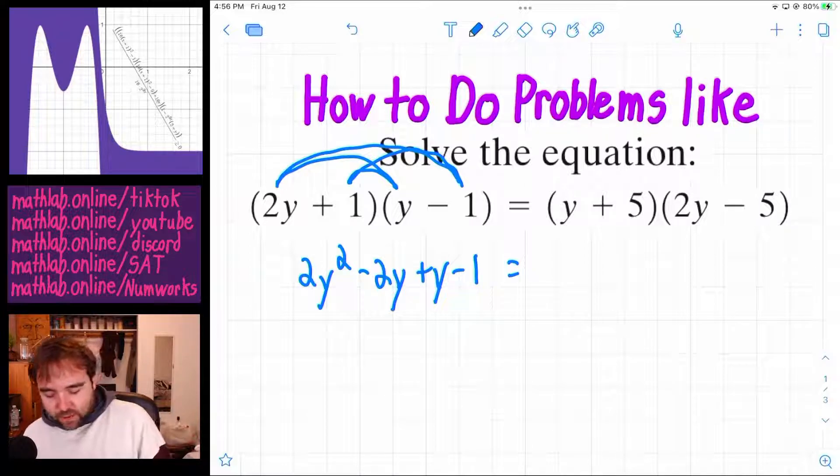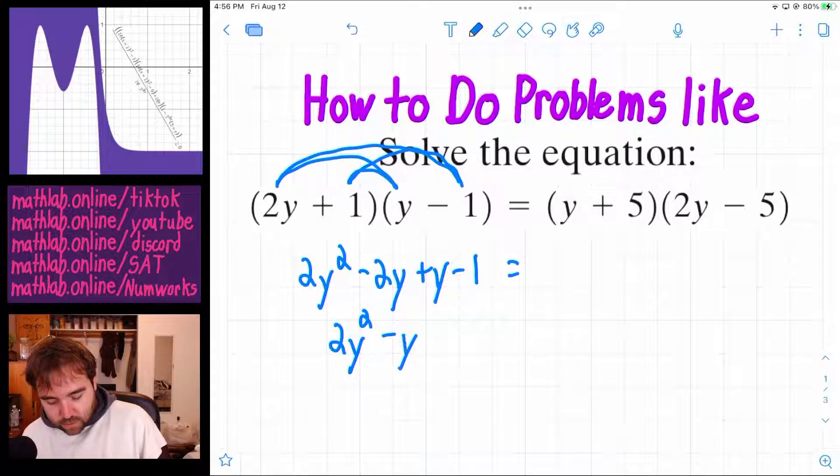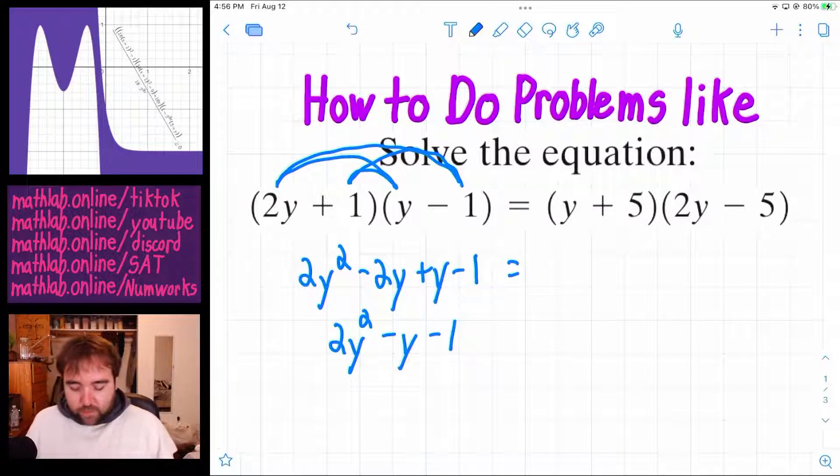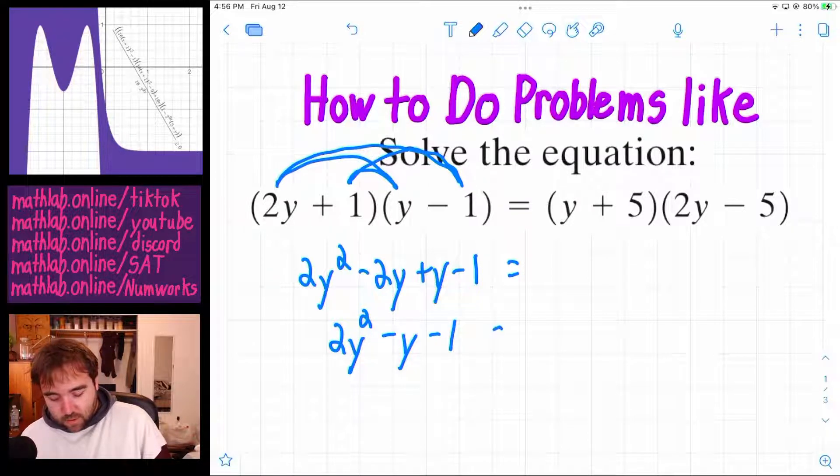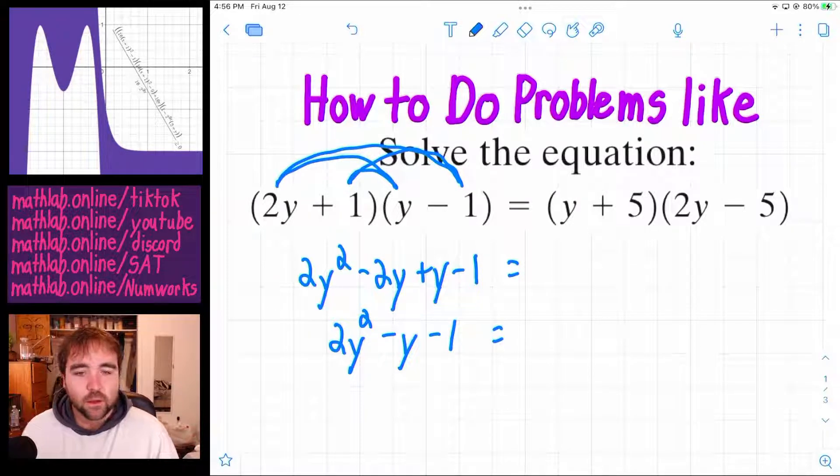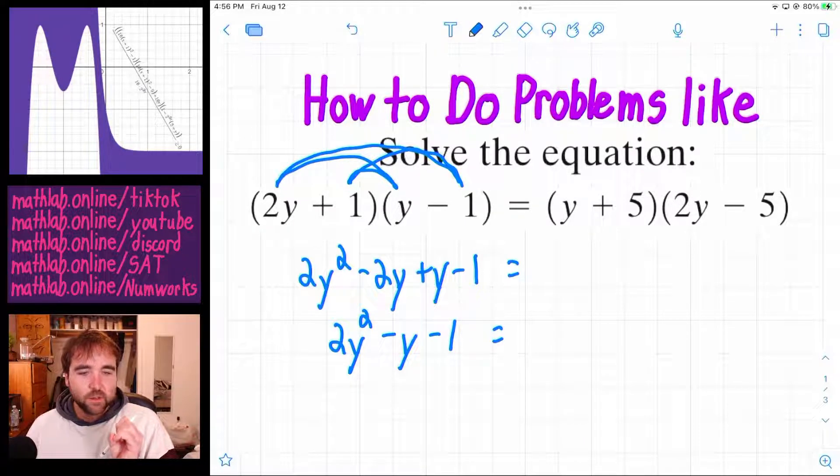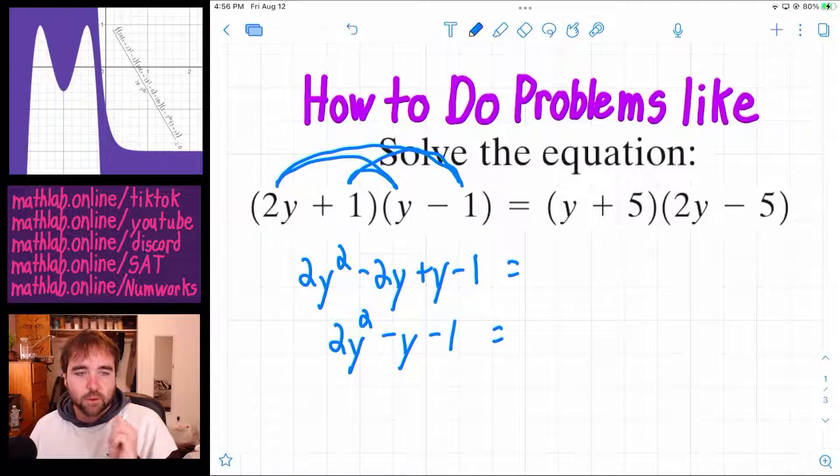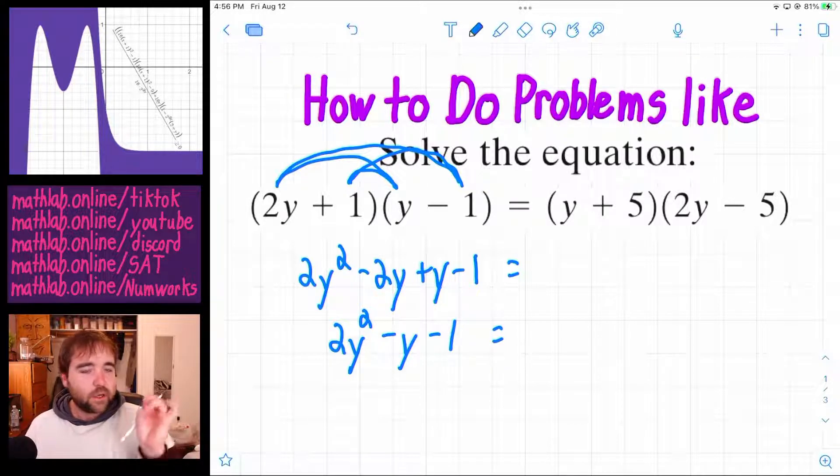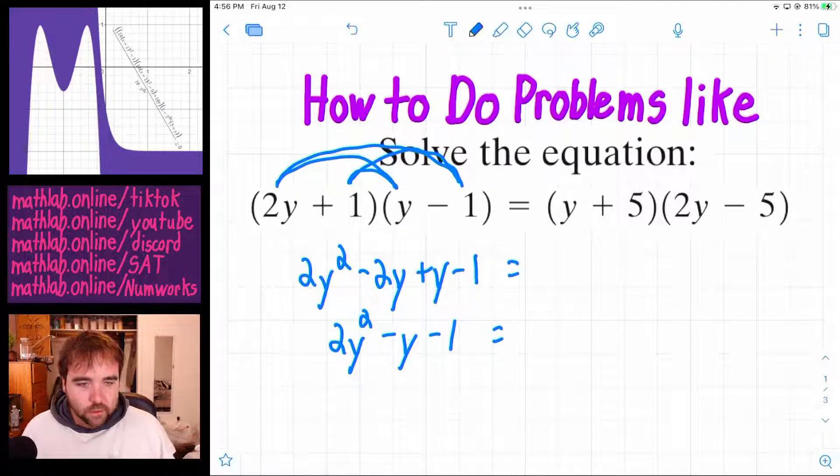So that's what we get on the left. The next thing you would do is combine like terms in the middle. Negative 2y plus y is negative y. Those two terms in the middle, they always combine. So a lot of times when you foil, you kind of try to do that in your head. So let's do that on the next one.